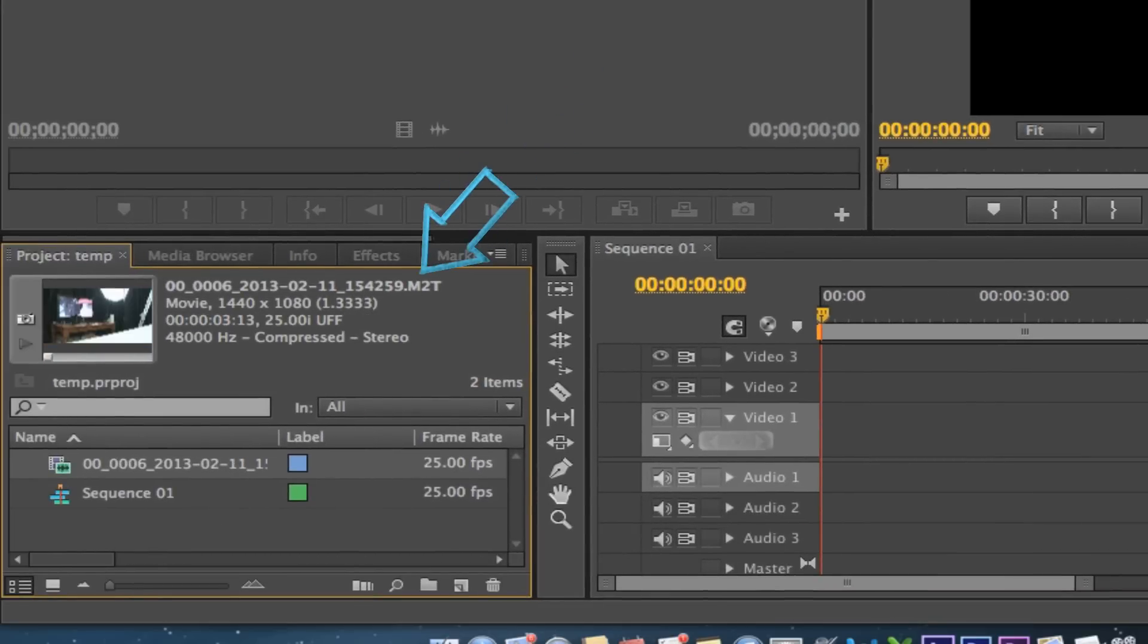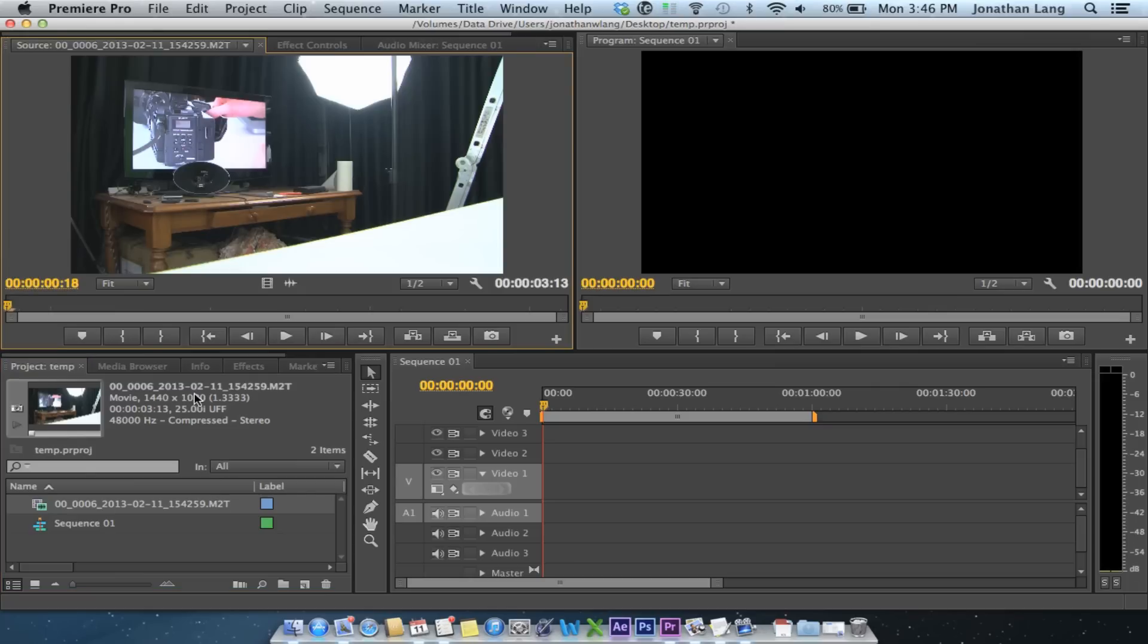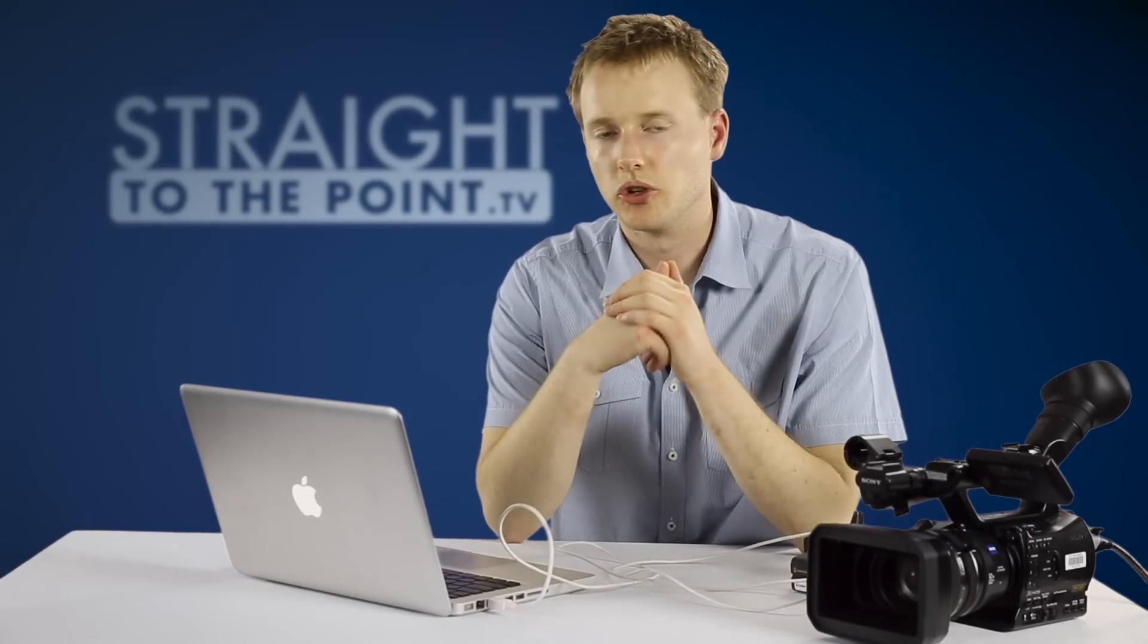You'll notice that the file name extension is a .m2t. That is the format that it records into or the file name extension that it records into. And once you've imported it, you should be able to double click on it and interact with it just like any other file. So this is just a different option.